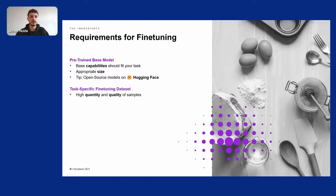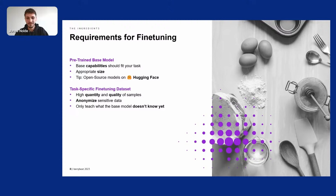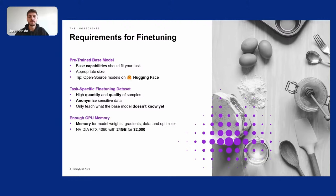Then you need a fine-tuning dataset. You need high quantity and quality of samples. You could anonymize sensitive data if needed. And specifically for fine-tuning — only teach what the model doesn't know yet; you should build on top of the base model's knowledge and not retrain it. You also need a GPU that can fit the model weights, gradients, the data and the optimizer. We bought our 25-gigabyte GPU for $2,000.